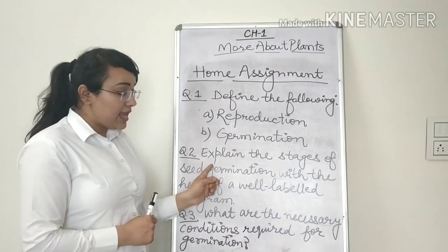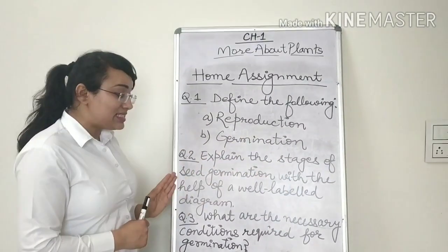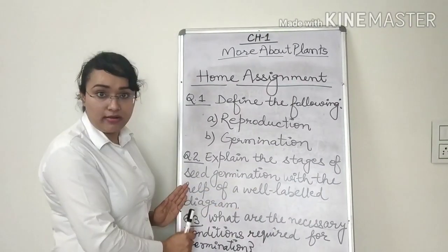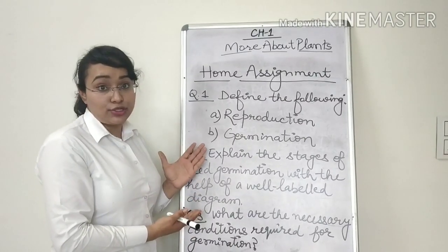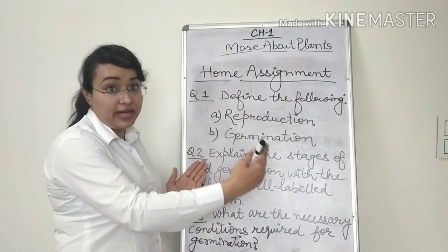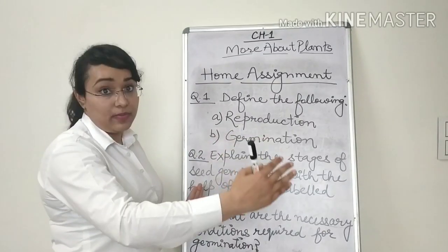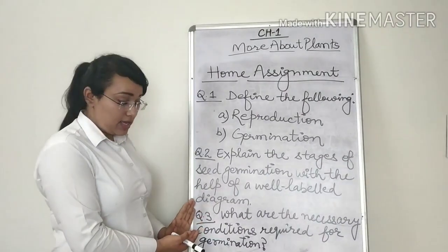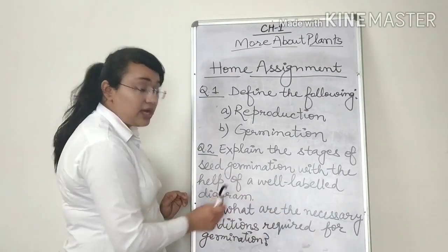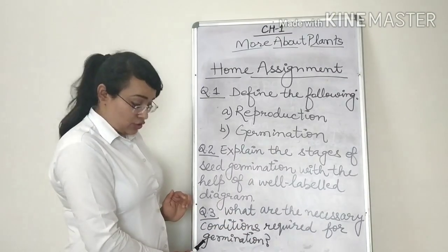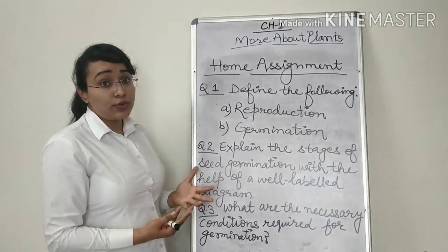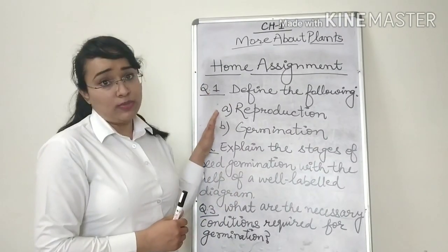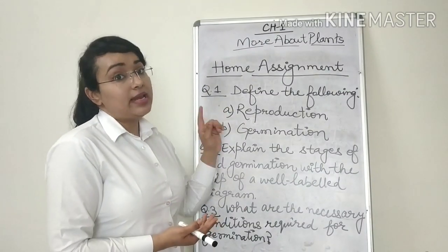Question number two, explain the stages of seed germination with the help of a well-labeled diagram. I'm sure you must have understood how a seed germinates from seed to a big plant. So the same is the question. Question number three, what are the necessary conditions required for germination?